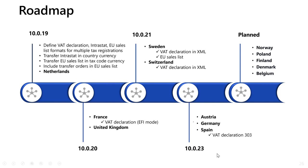About the plans: in the 10.0.23 update, we plan to release Austria, Germany and Spain, and for Spain we also plan to release the new VAT declaration model 303. We also plan in upcoming monthly updates to release Norway, Poland, Finland, Denmark and Belgium.